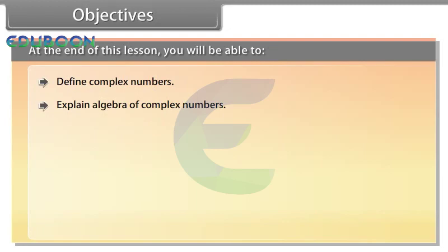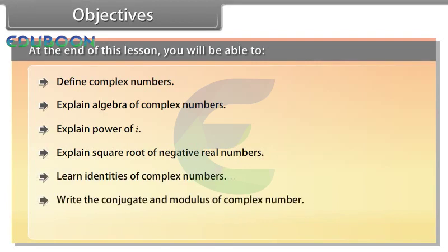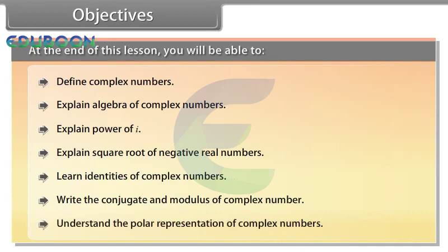Objectives. At the end of this lesson, you will be able to: define complex numbers, explain algebra of complex numbers, explain power of iota, explain square root of negative real numbers, learn identities of complex numbers, write the conjugate and modulus of complex numbers, and understand the polar representation of complex numbers.